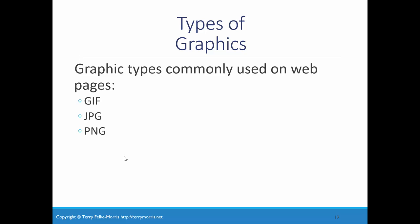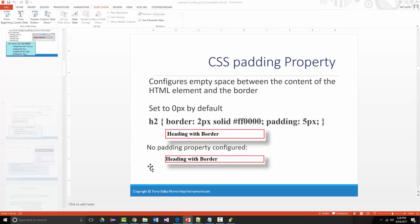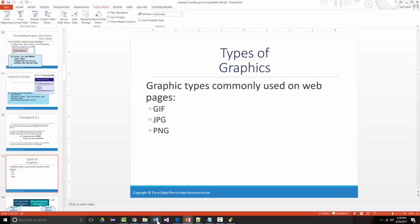Now, graphic types commonly used on the web. GIF is probably the type used least often because GIFs pretty much look unprofessional. JPEGs and PNGs are used much more and look much more professional. Let me try to grab a PNG and a JPEG file to show you.